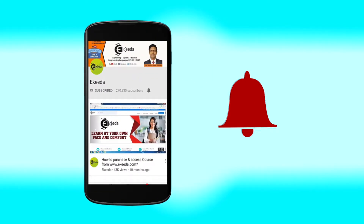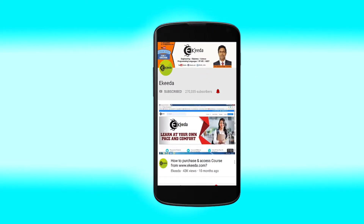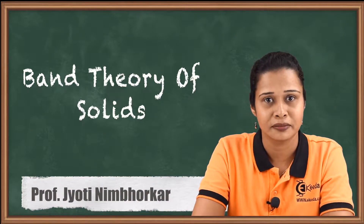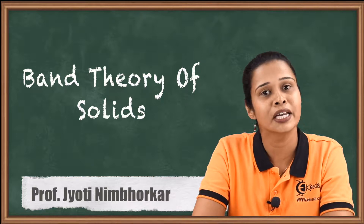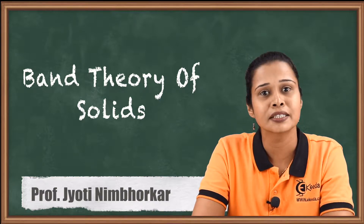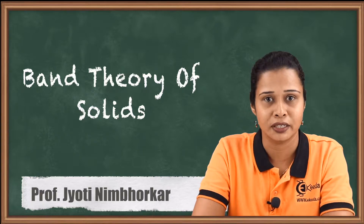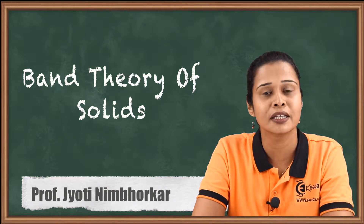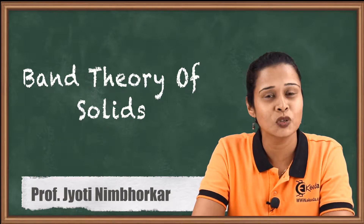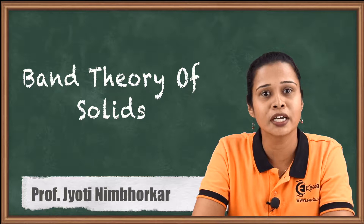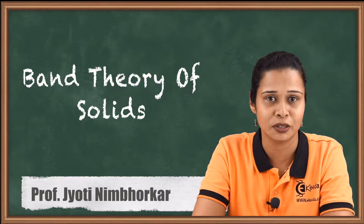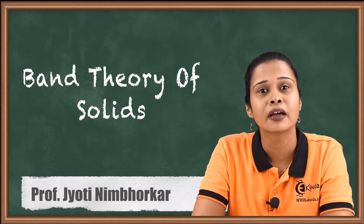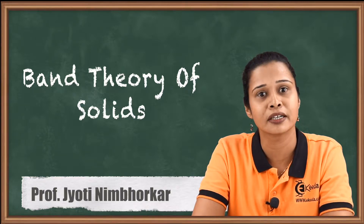Click the bell icon to get the latest videos from Ikeda. Hello friends, today we will see energy bands in solids. We know solids are mainly classified into three parts: conductor, semiconductor, and insulator. In case of a conductor, we have free electrons that take part in the conduction process. In an insulator, we don't have free electrons, so it does not take part in conduction. A semiconductor at low temperature behaves like an insulator and at high temperature behaves like a conductor.